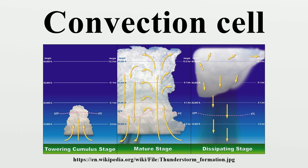As air moves along the ground it absorbs heat, loses density and moves up into the atmosphere. When it is forced into the atmosphere, which has a lower air pressure, it cannot contain as much fluid as at a lower altitude. So it releases its moist air, producing rain. In this process the warm air is cooled, it gains density and falls towards the earth, and the cell repeats the cycle.